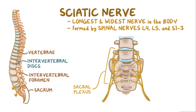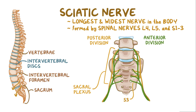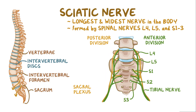All the nerves in the plexus, except S3, are split into two divisions: anterior and posterior. Anterior divisions of L4, L5, S1, S2, and the entire S3 nerve create the tibial nerve, while posterior divisions of L4, L5, S1, and S2 form the common fibular nerve.